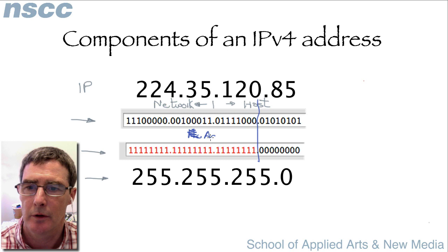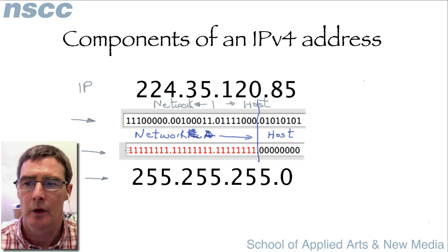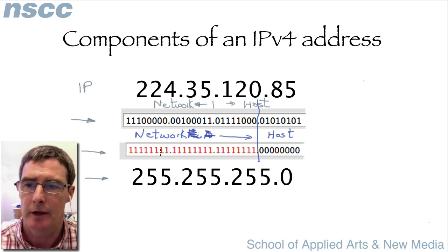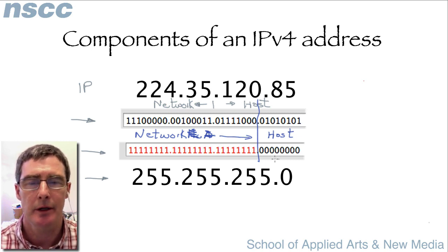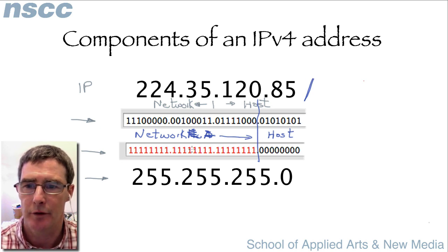This is all the network part of the address, and this part is referred to as the host part. Network masks always have a series of ones and then change to a series of zeros — they never mix ones and zeros. Because of this, we can use a different notation. Sometimes you'll see just a network address, a slash, and then a number for the number of ones — for instance, 8 and 8 and 8 gives 24.